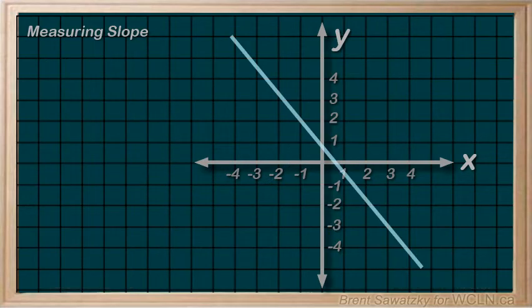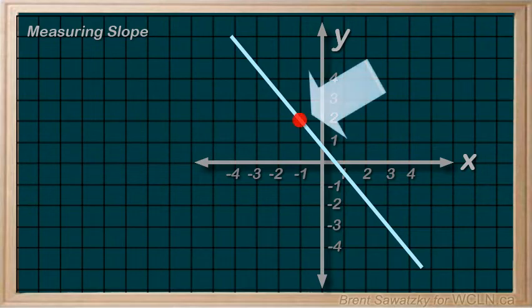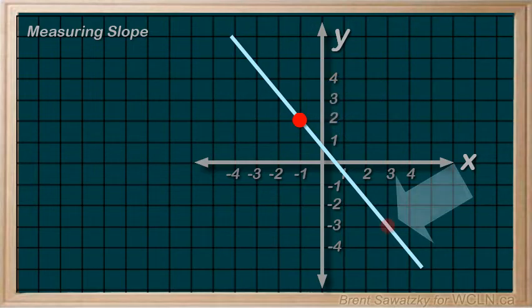So, first, remember, we identify points on the line that are easy to read. Again, they should cross through intersections on our grid, if at all possible. Here's a good point, right on the intersection of grid lines. This one will be easy to read. And, here's another.